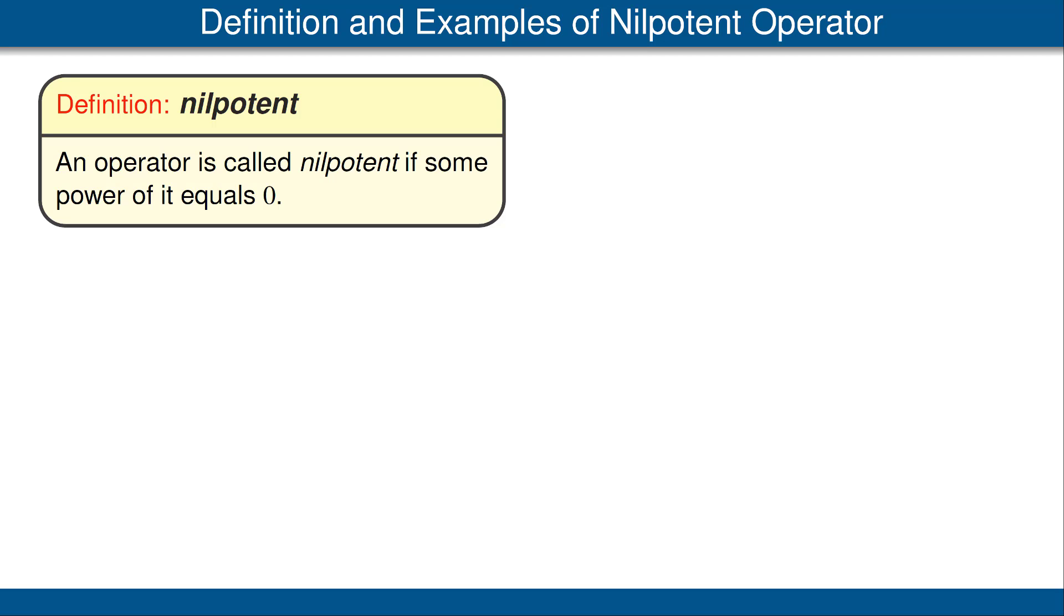An operator is called nilpotent if some power of it equals zero. Let's look at two examples.